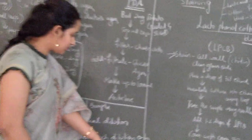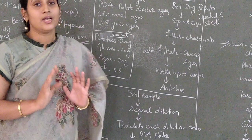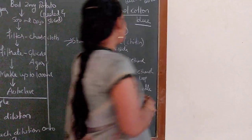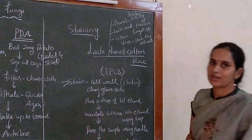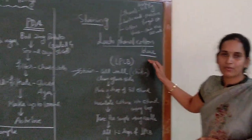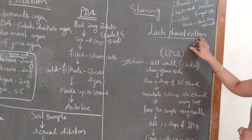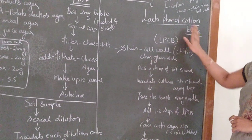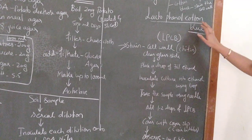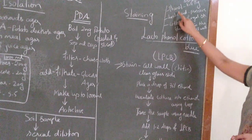After 3 to 4 days, if you find any cottony growth on the plate, that indicates the fungi has grown. The staining technique used to identify the fungi is known as lacto-phenol cotton blue. This stain is made up of three major ingredients: phenol, lactic acid, and cotton blue.